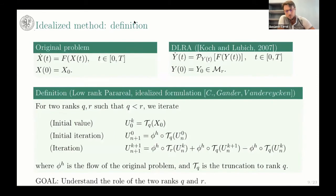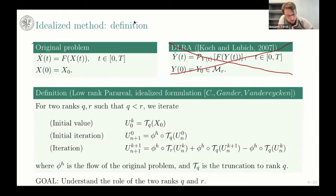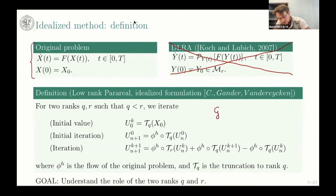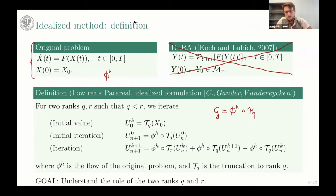Now I'll talk about our idealized method. Forgetting for a moment about dynamical low-rank approximation, we consider our original initial value problem. Our method uses as a coarse solver G the flow composed with the truncation to rank Q. The fine solver will be the flow composed with the truncation to rank R. We then apply Parareal with this fine solver and coarse solver.